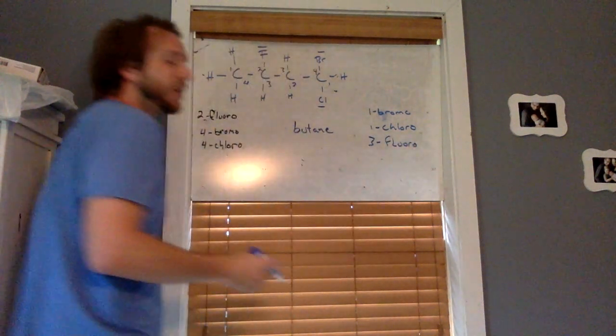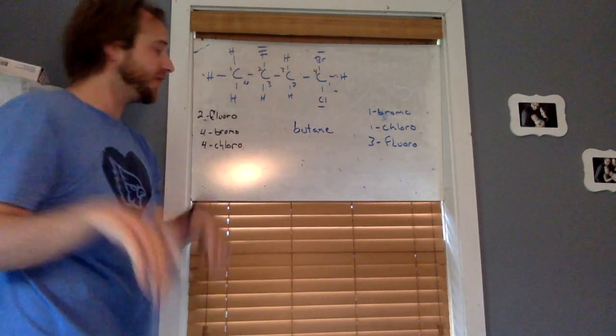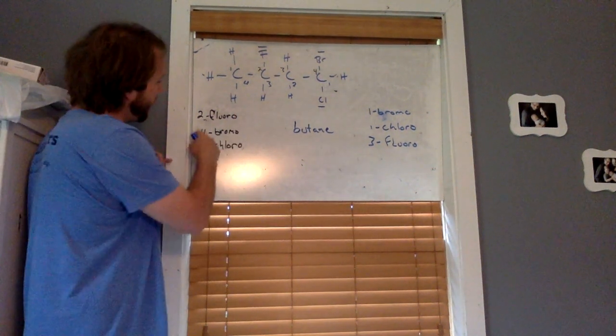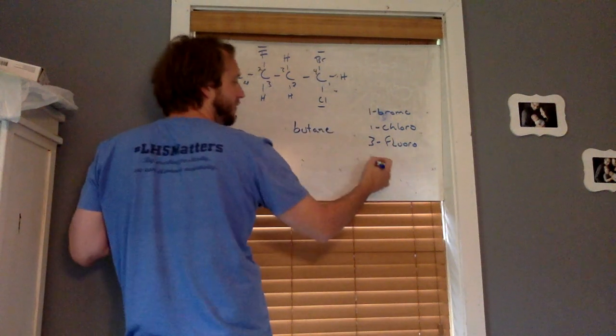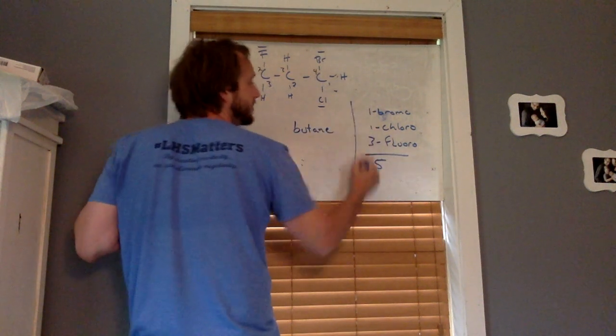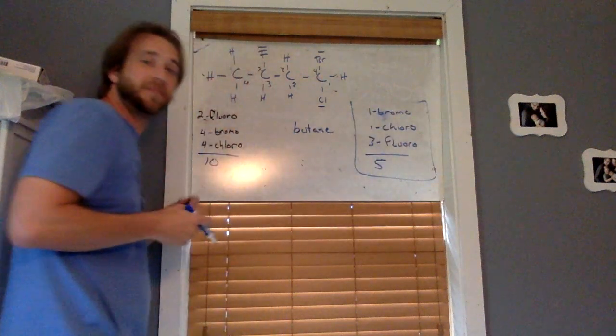If we were to look at the sums of all these values that we've got for our different constituents on here, we'd have a four, four, and a two that would give us a total of ten. We've got one, one, and three for a total of five. Which means our better numbering system is going to be going from right to left.